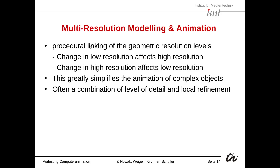Then we have multi-resolution modeling and animation, which is a procedural linking of the geometric resolution levels. Changes in low resolution affect the high resolution, and changes in high resolution affect low resolution — they are connected. For example, changing the face or visual expression propagates across levels. This greatly simplifies the animation of complex objects, and often a combination of level of detail and local refinement is used.